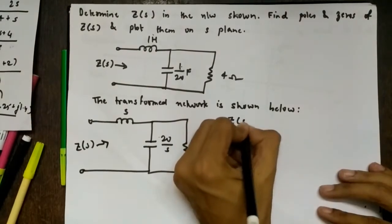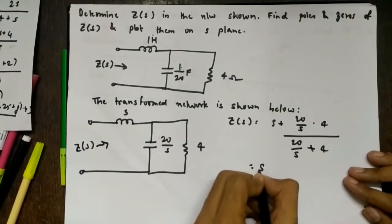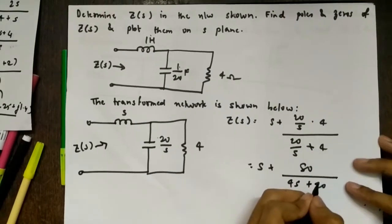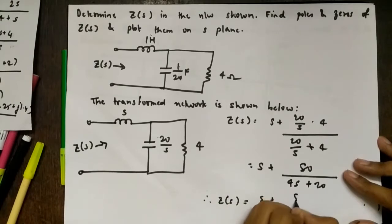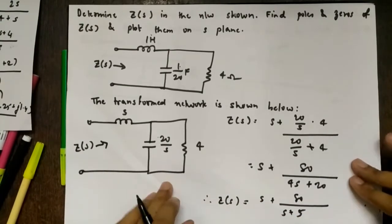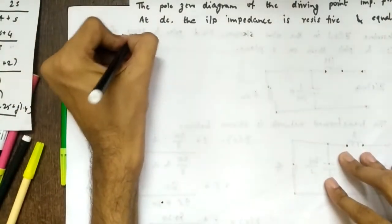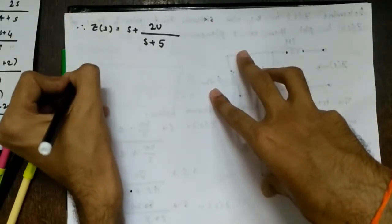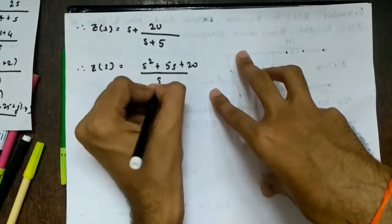Z(s) equals the series inductor s in series with the parallel combination of 20/s and 4. This gives Z(s) = s + (20/s · 4)/(20/s + 4) = s + 80/(4s + 20). Simplifying with the coefficient of s equal to 1, we get Z(s) = (s² + 5s + 20)/(s + 5).